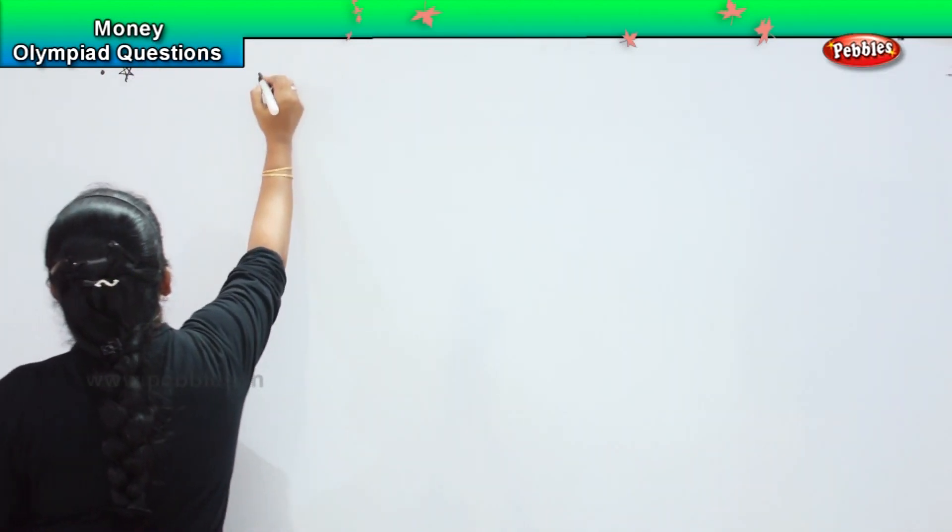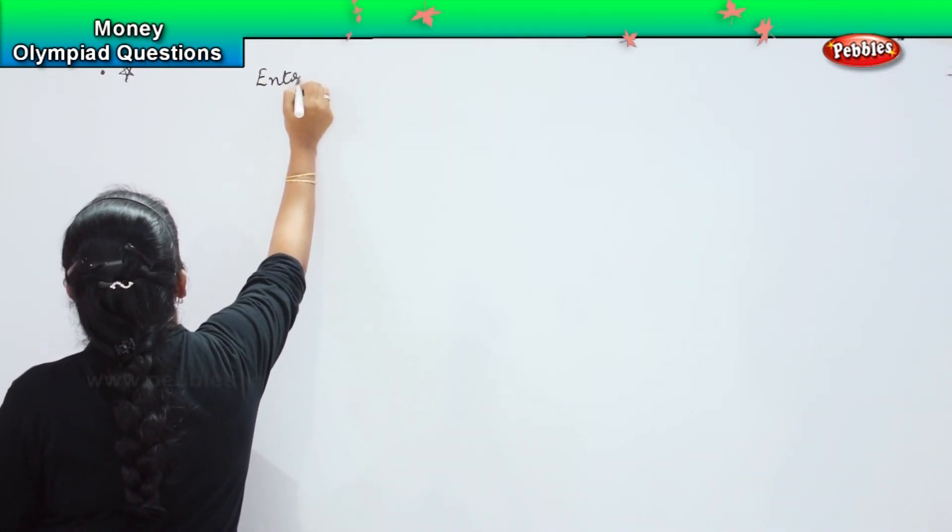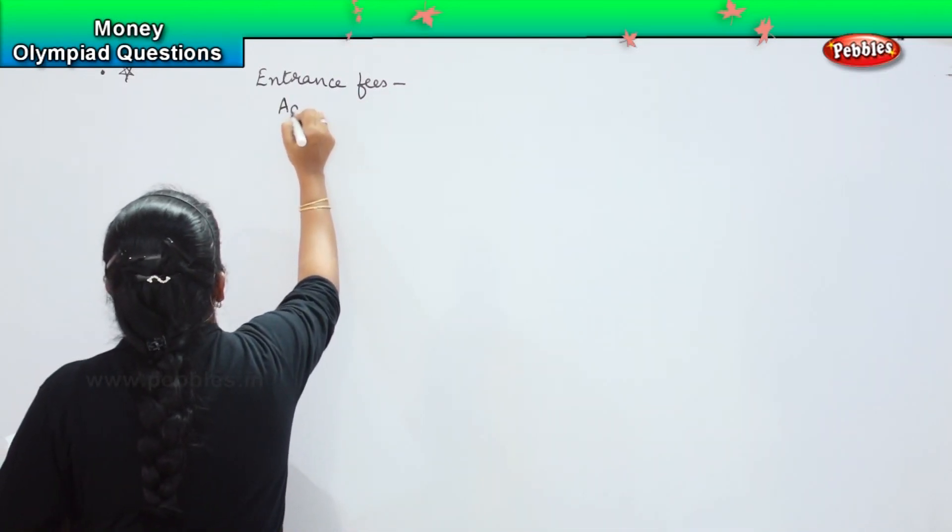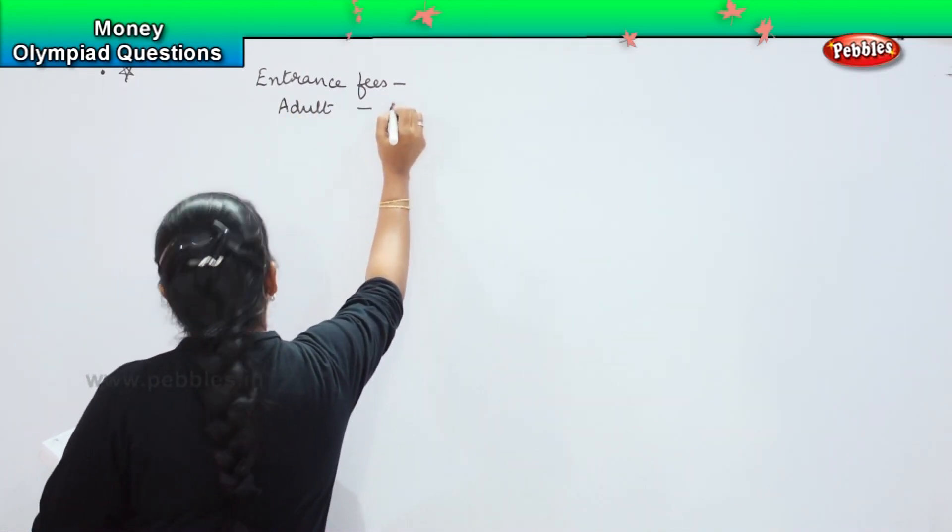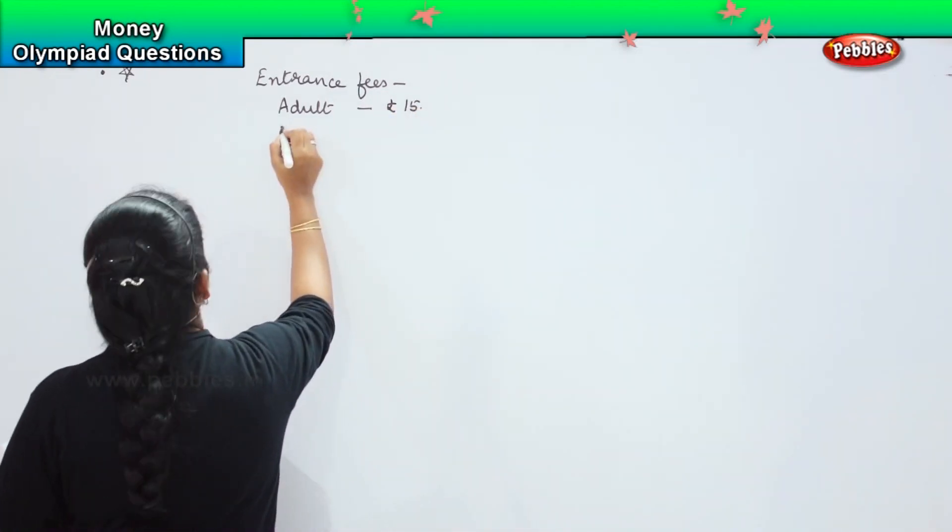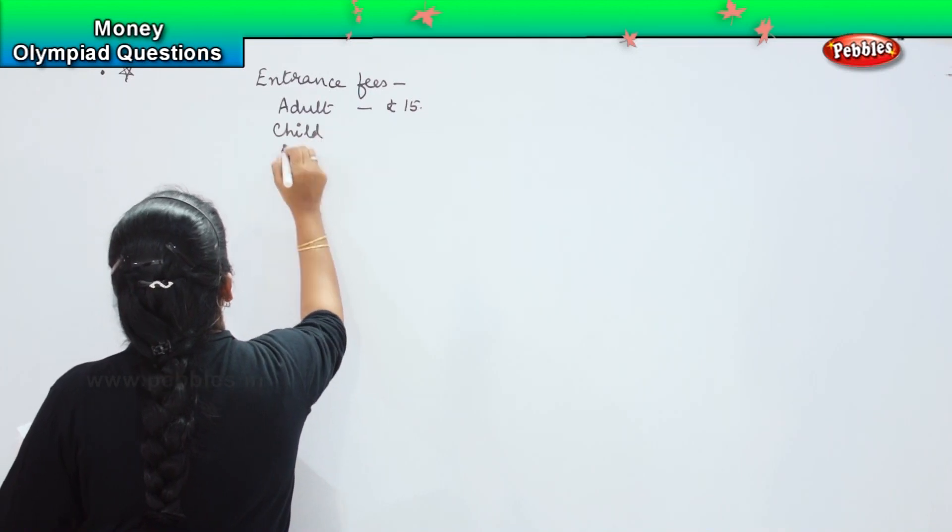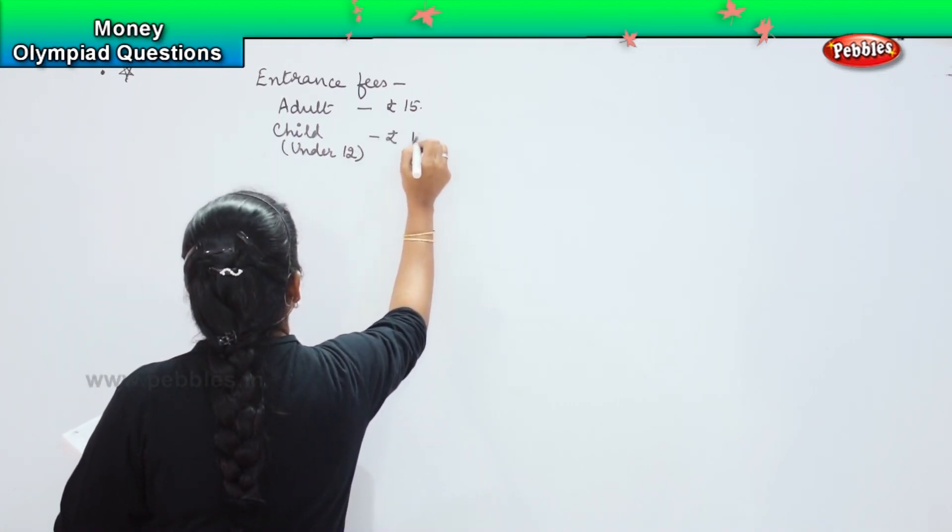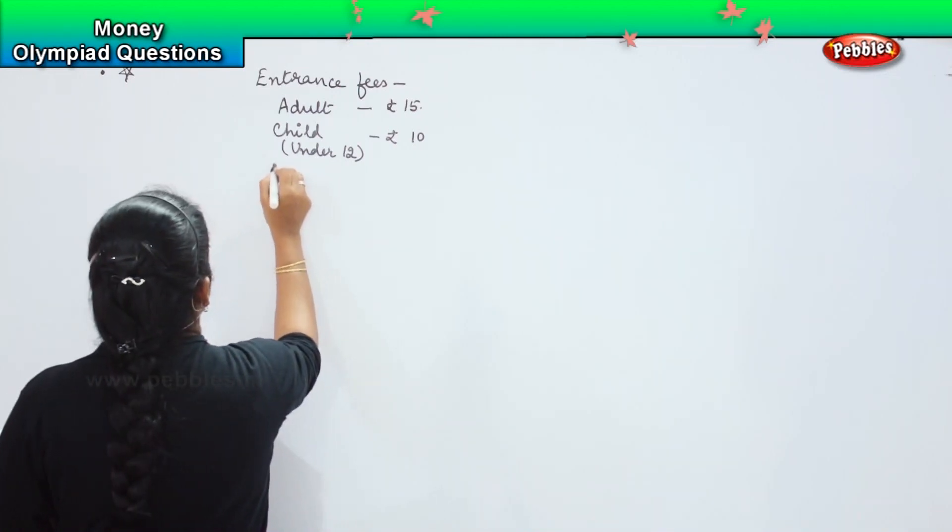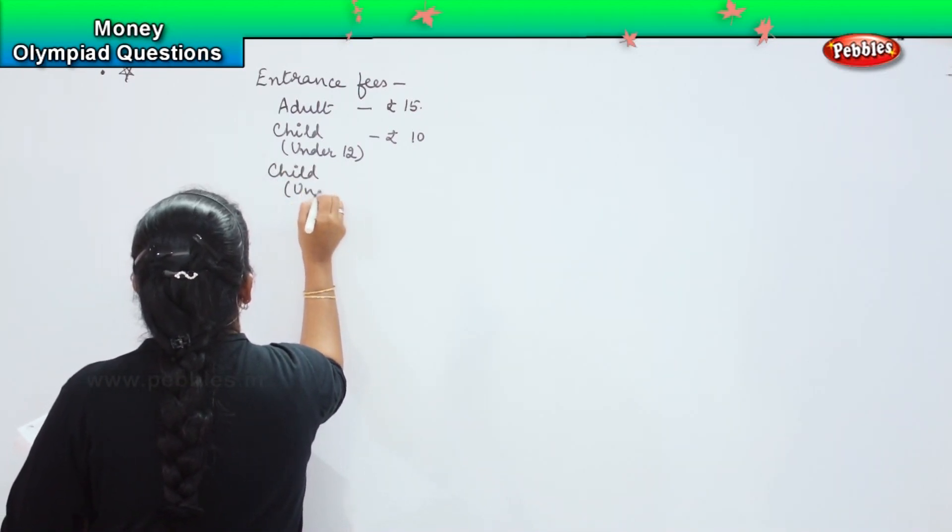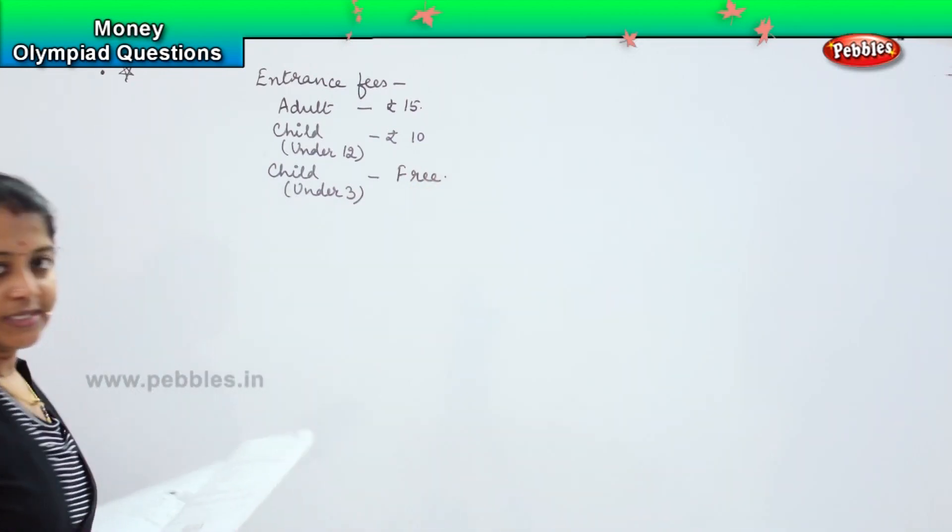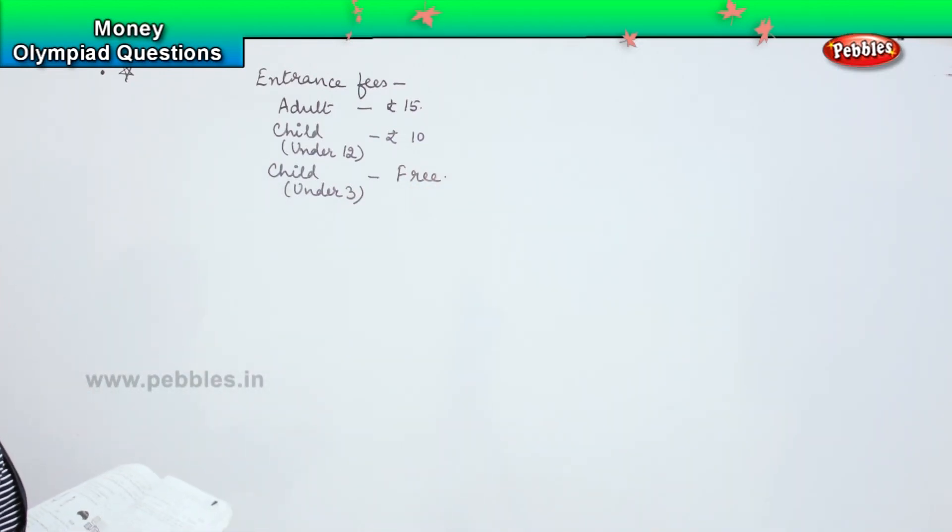The next question for you is, now see the table once again. The next question says the entrance fee is as follows. For adult, it is rupee 15. This is the entrance fee of a zoo.